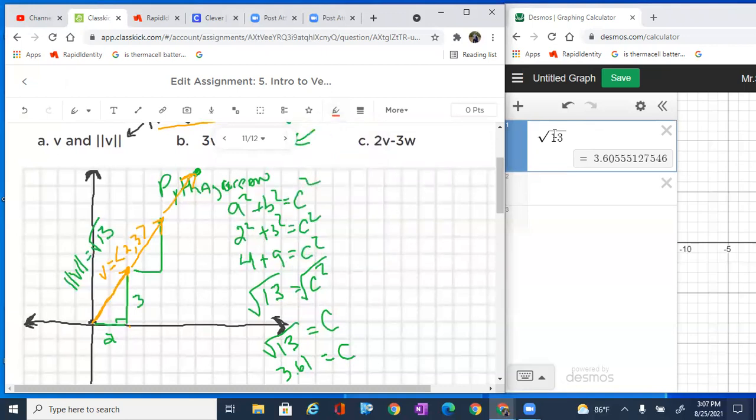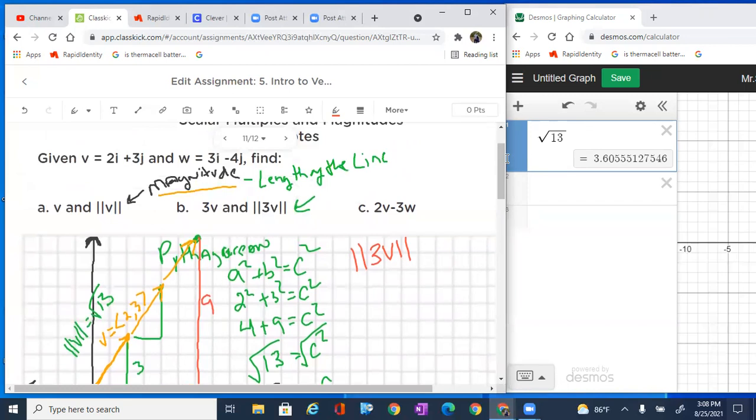So now let's go ahead and find the magnitude of 3v. Well, let's go ahead and write it as what we know it's located at. So we know we've tripled it. So we know we've gone over 6 and we've gone up 9. So really, we can write 3v right now if we were to go back and just do the piece here. How do we write it? Well, we would say, well, it's over 6 up 9. So 6i plus 9j.